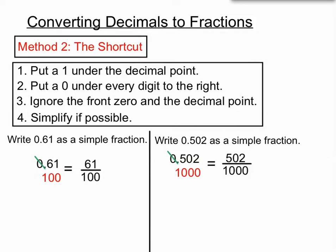Now we have to make sure we've got the simplest fraction we can. 61 over 100 was already a simple fraction, but here once again we've got an even number on the top and bottom. So let's divide 2 into the top and 2 into the bottom, and we get 251 for the top and 500 for the bottom. That's the simplest fraction we can get there.